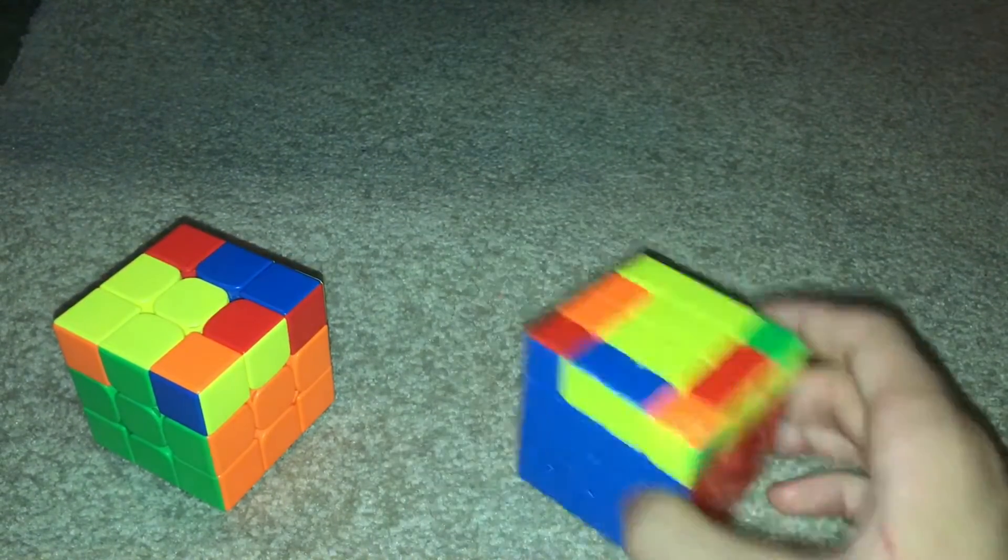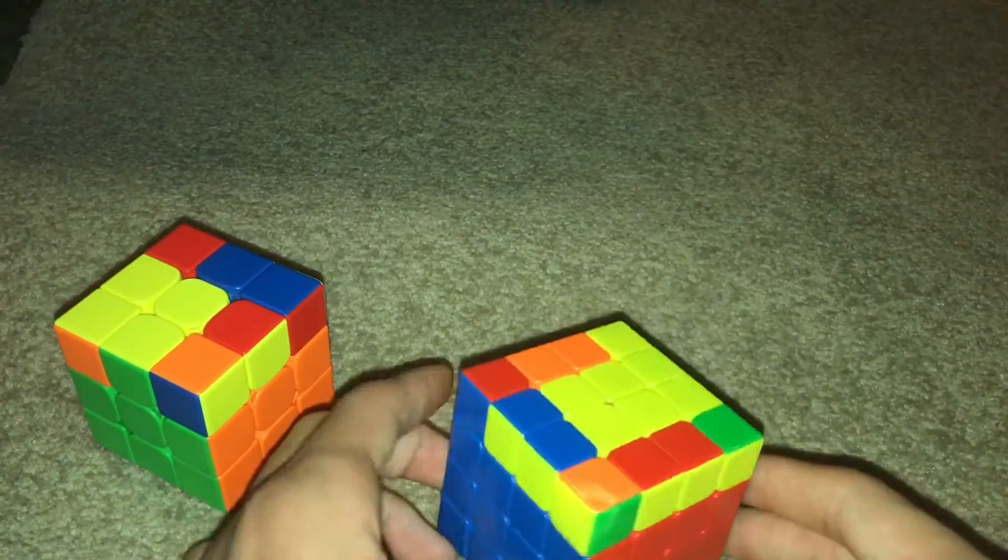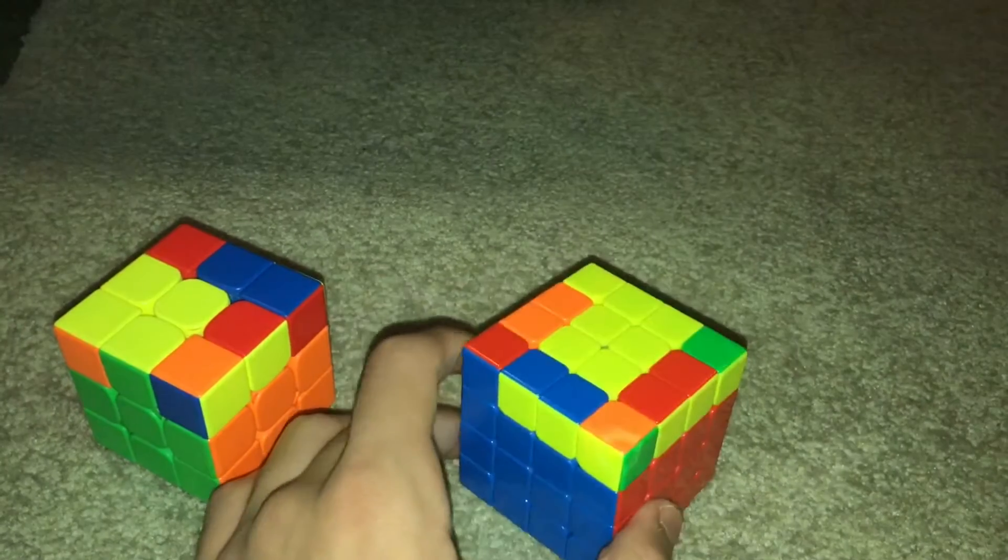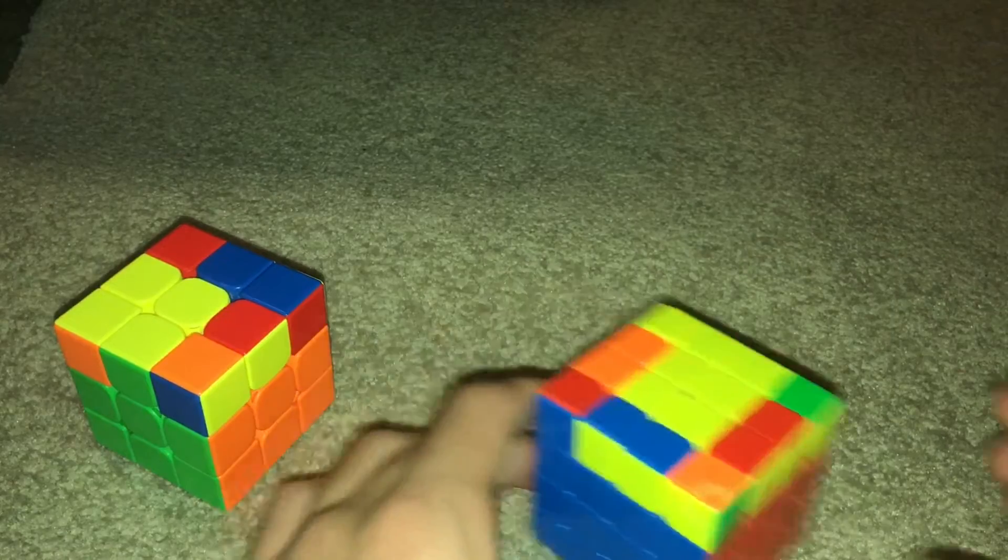First up, OLL Parity. You know when you have OLL Parity when you have one or three of the edges facing up. Right now I have one facing up, meaning I have the parity.